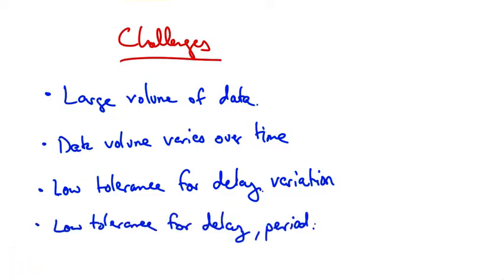Users might have a low tolerance for delay, period. So in cases like games or voice over IP, delay is typically just unacceptable, although users can tolerate some loss. Before we get into how the network solves these challenges,